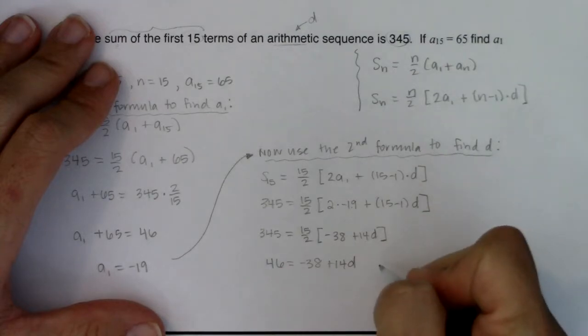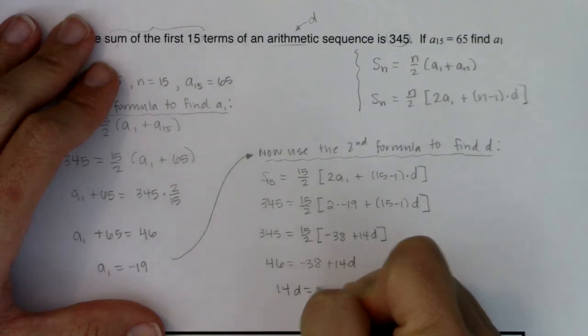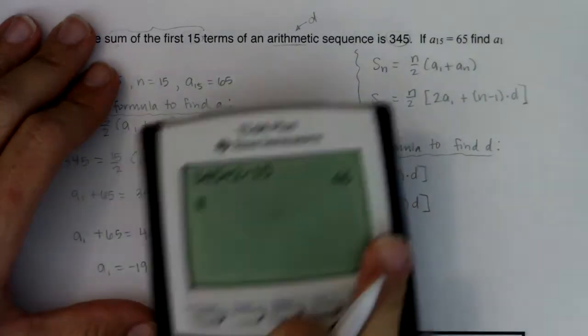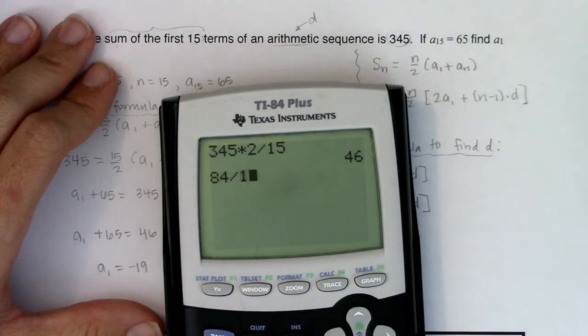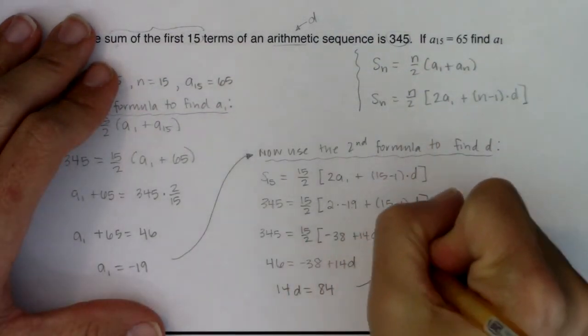When I add the 38 over, I'm going to get 14d is equal to 84. And when I divide 84 by 14, what are we looking at? I'm going to get 6.